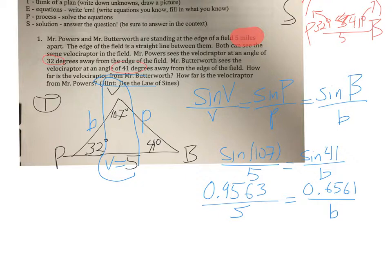And solving this, so we get 0.9563 divided by 5 is 0.1913. Multiply both sides by B to get that by itself. And 0.6561. To finally get B by itself, I'm going to divide by 0.1913. So we get 0.6561 divided by 0.1913.